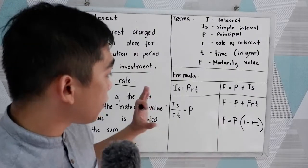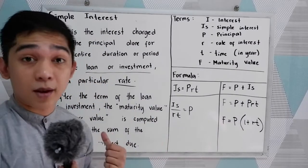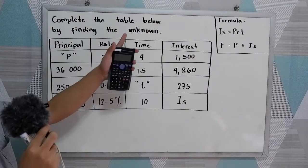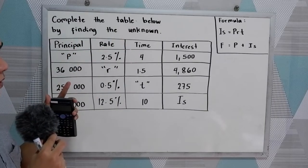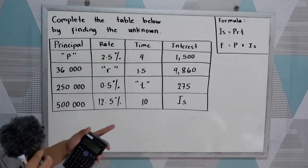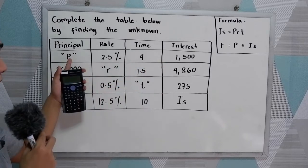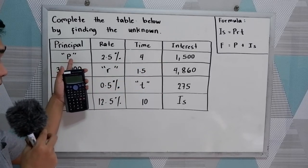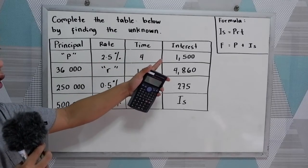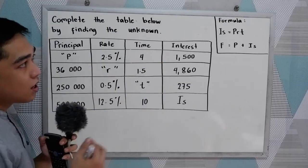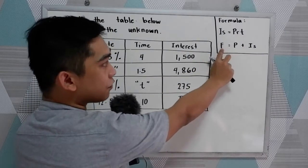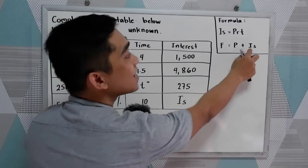Now we're going to apply our formula in our problems. Let's try this example: complete the table below by finding the unknown. We have the given principal, rate, time, and interest. In our first row, we're going to find the principal — the unknown is P. We have the given rate of 2.5%, time of 4, and interest of 1,500. We have the formula: simple interest IS = P × r × t, and future value F = principal plus simple interest.